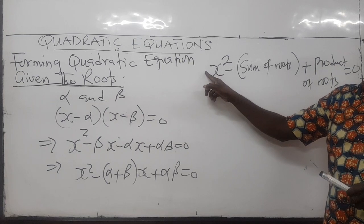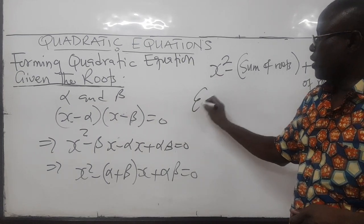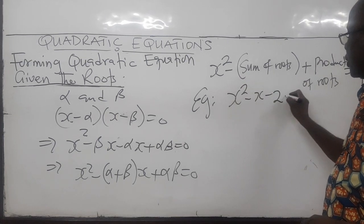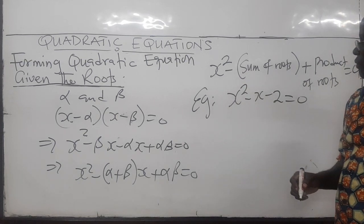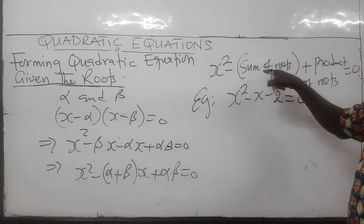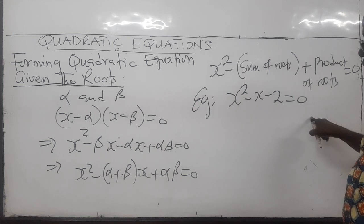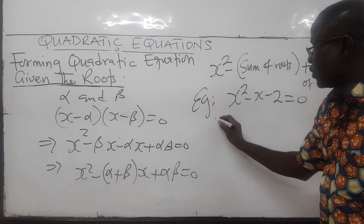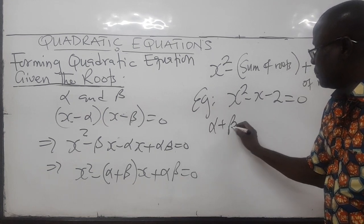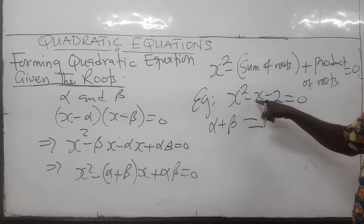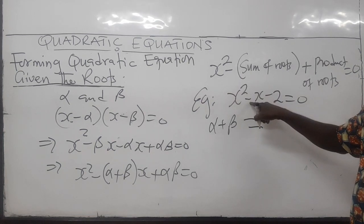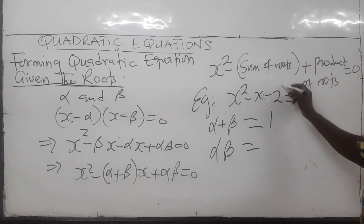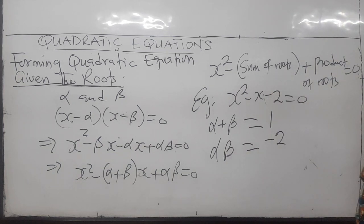Notice that the coefficient here is one. For example, if you are given the quadratic equation X squared minus X minus two is equal to zero, you don't need the roots themselves — all you need is the sum and the product. Since the coefficient is one, you can say that alpha plus beta is equal to one, and the product of the roots, alpha beta, is equal to negative two.